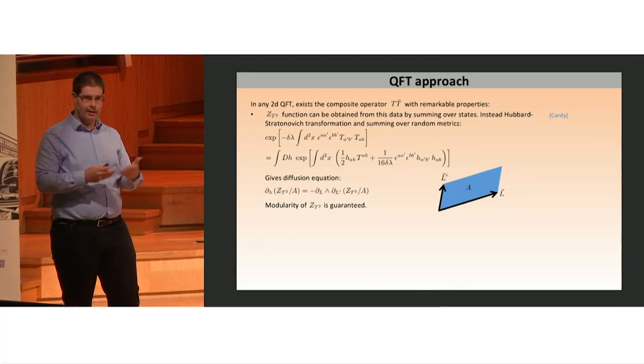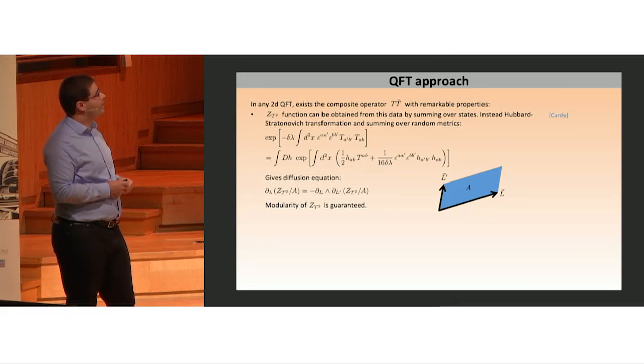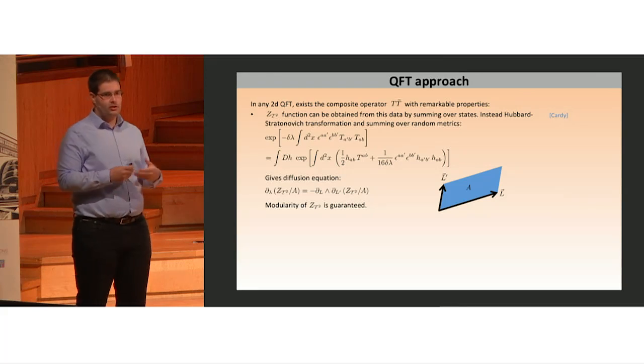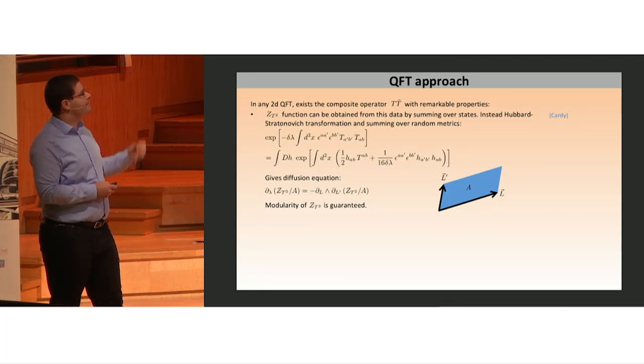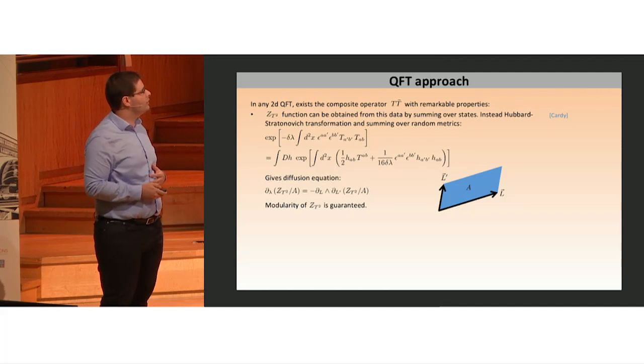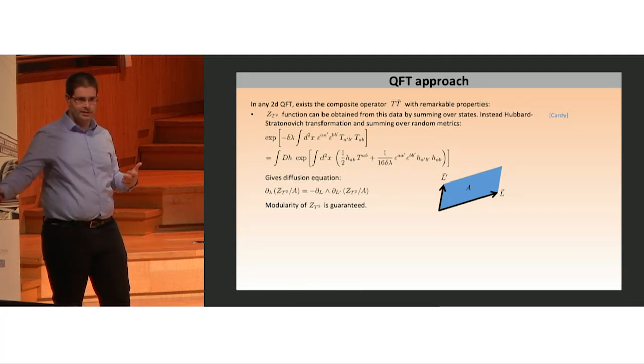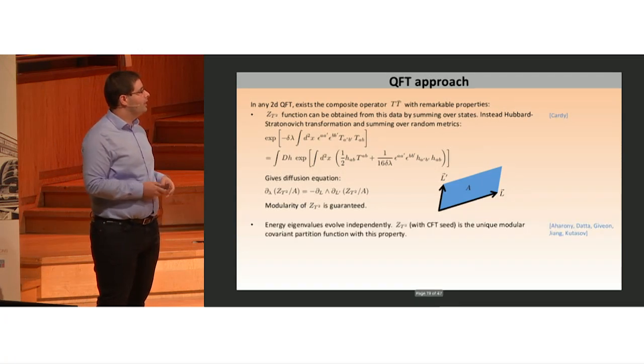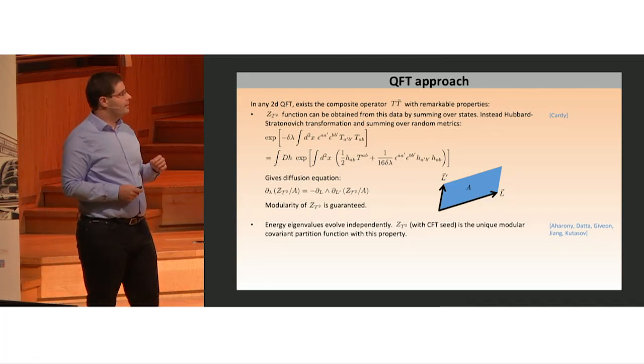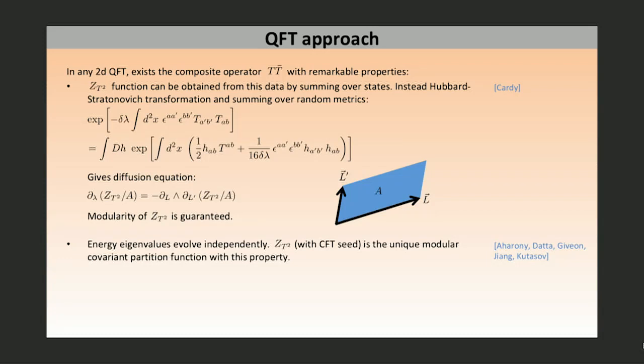Once we have the energy eigenvalues, we can easily get the torus partition function by simply summing over states. But the more insightful derivation was provided by Cardy, who decoupled the TT-bar deformation in terms of a Hubbard-Stratonovich field, which can be interpreted as a random metric over the torus. Doing this step by step, we arrive at the diffusion equation for the torus partition function divided by the area. If the starting partition function was modular invariant, this equation has nice modular properties.